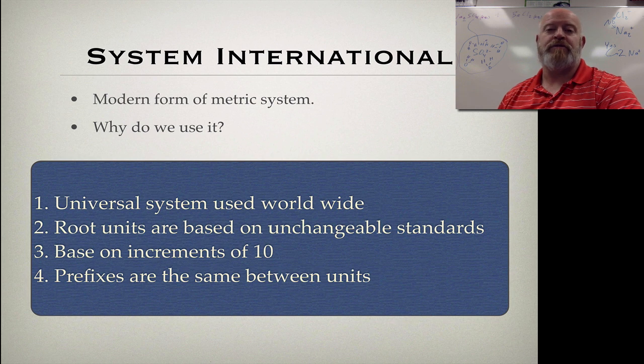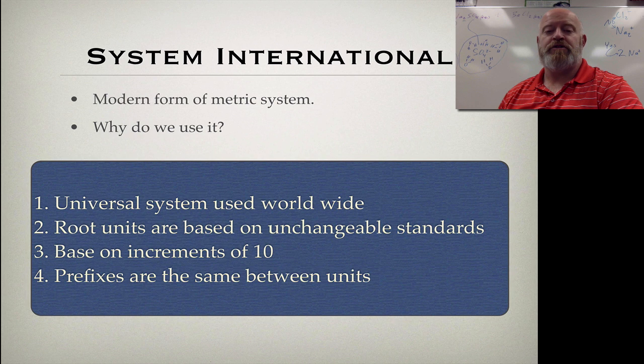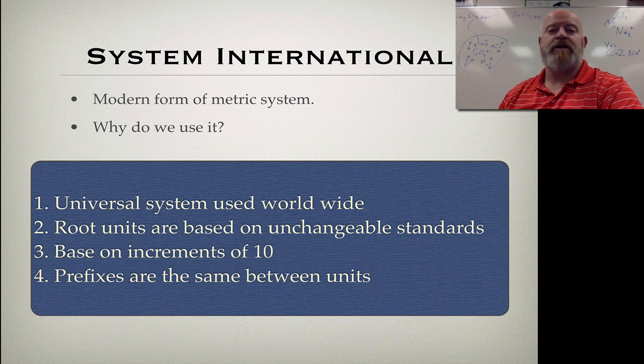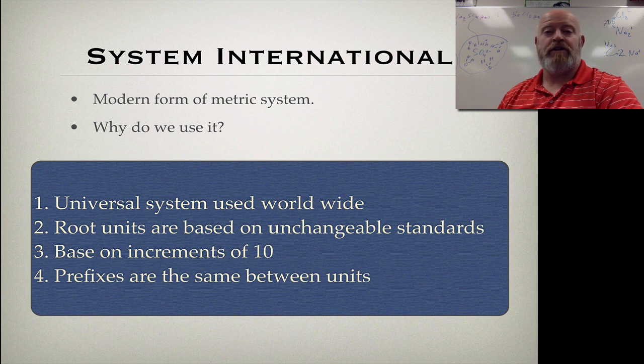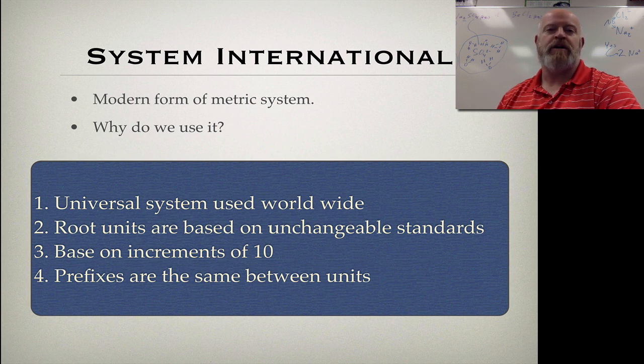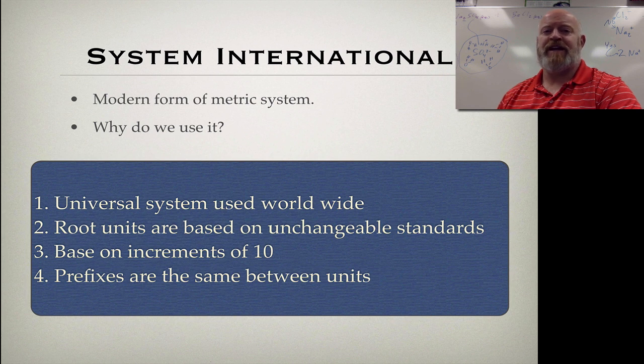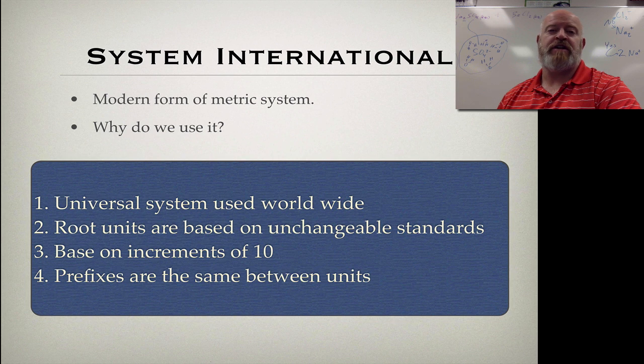Number two, the root units are based on unchangeable standards. What I mean by that is, if we talk about what is a meter, a meter is defined by a very specific amount of time it takes light to pass through a vacuum. That is unchangeable. Literally our entire planet could go away and we could relocate to a new planet and we could still determine what a meter is on a new planet. Time is determined by the radioactive decay of cesium, so no matter where we are if we can get our hands on cesium we can re-establish time no matter in any place in any location. All of these measurements have been standardized to something that's unchanging and that will always be universal for us to access and reuse.